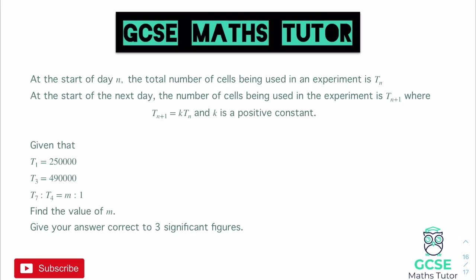Looking at this question, it says at the start of day n, the total number of cells being used in the experiment is Tn. At the start of the next day, the number of cells being used in the experiment is T(n+1), where T(n+1) is equal to k lots of Tn and k is a positive constant. So when we're looking at iterations, this tells us that to get the next number in our sequence we multiply it by k. That tells us that k is a positive constant and the fact that it says it's a constant gives us a hint here that k is going to be a fraction.